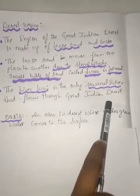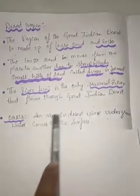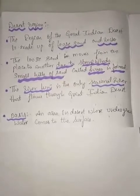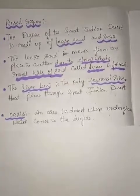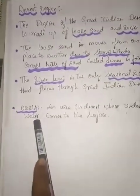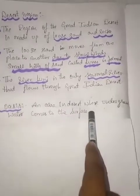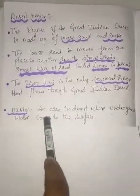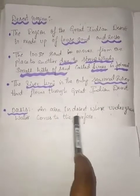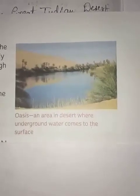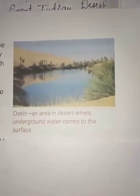In certain areas of the desert, underground water below the surface comes up to the surface. These areas are called oasis — O-A-S-I-S. An area in the desert where underground water comes to the surface is called an oasis.